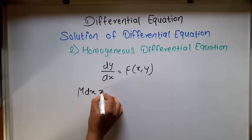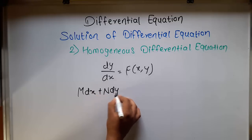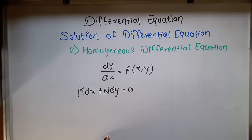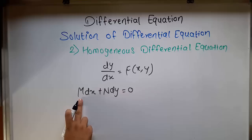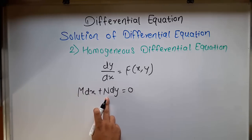The differential equation M dx plus N dy equal to 0 is said to be homogeneous if all the terms in M and N have the same degree.